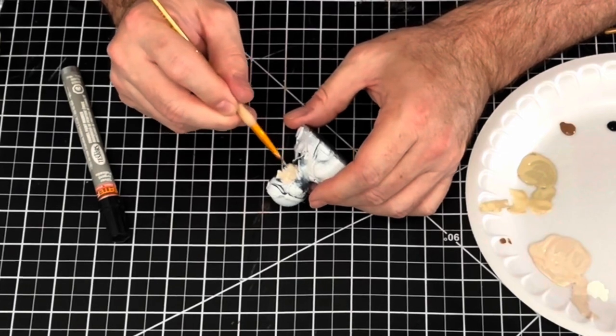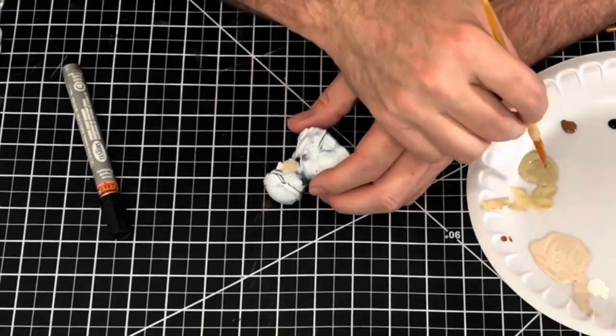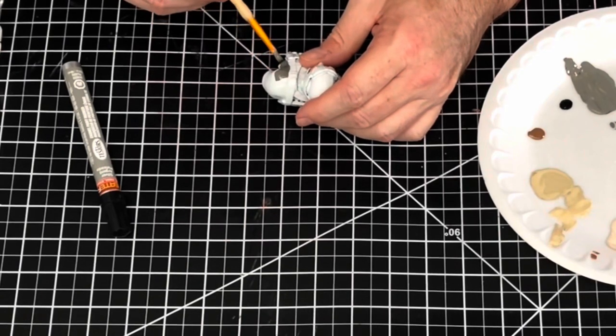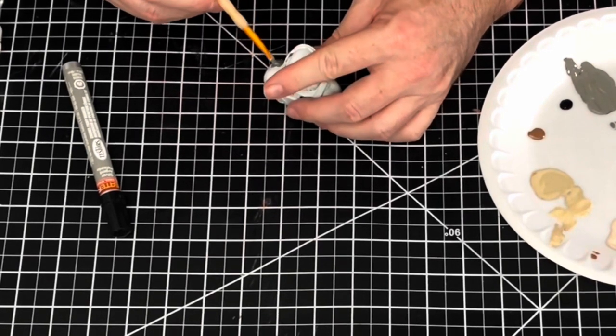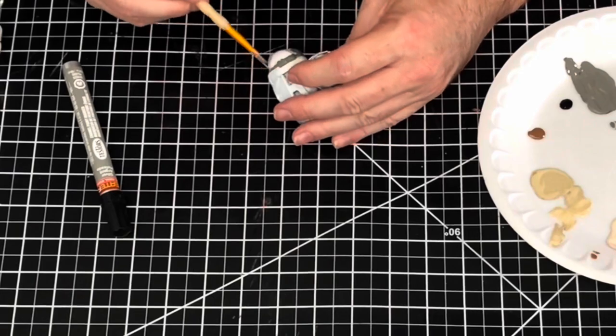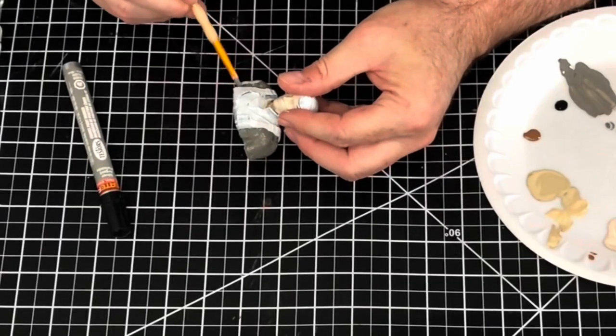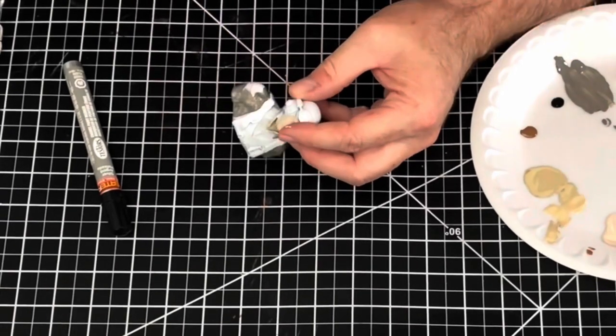So I started out with the flesh tone. The collar and flesh, the neck itself was separate, so I wanted to get the flesh tone down first and then I can touch up any over brushing or any paint that I might have gotten on the uniform.